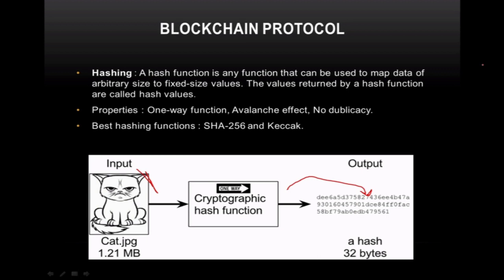In the blockchain protocol, there is something known as hashing. A hash function is any function that can be used to map data of arbitrary size to fixed-size values. The values returned by a hash function are called hash values. It is a one-way function, meaning the output hash cannot be reverse-engineered back to the original input data.